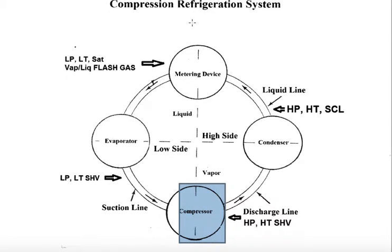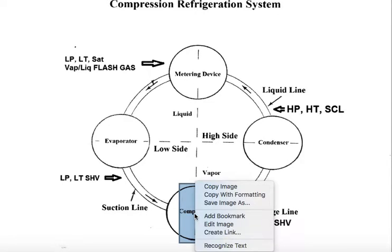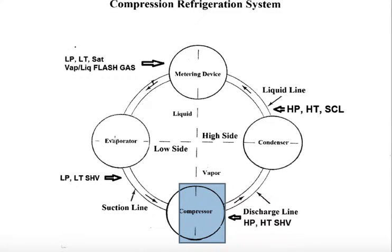You'll see that there are a couple of dotted lines across here. We have our low side and our high side. There are two points of pressure change: the metering device and the compressor. Then we have vapor and liquid. The evaporator and the condenser are the two points of state change — by state change, I mean conversion from a vapor to a liquid or from a liquid to a vapor.